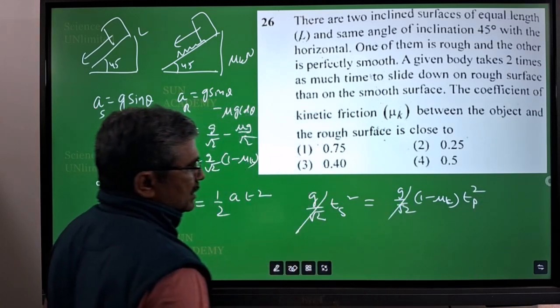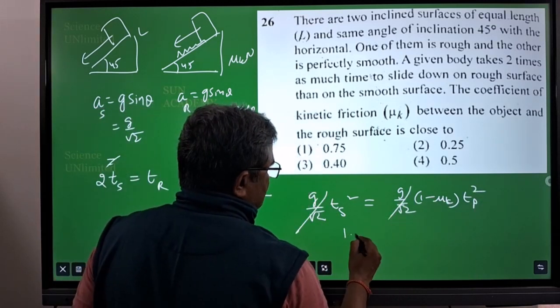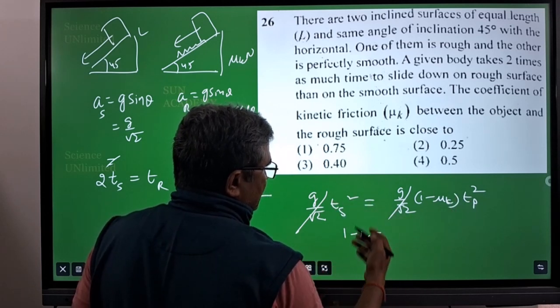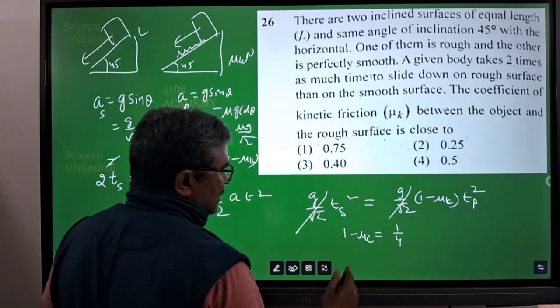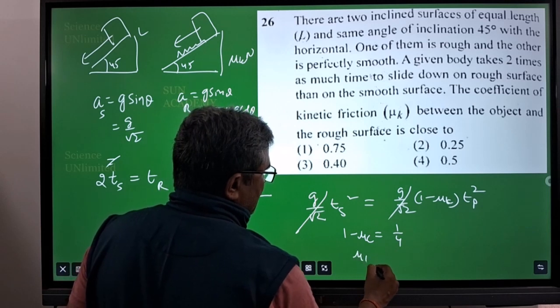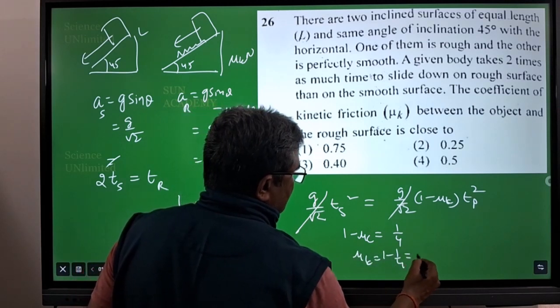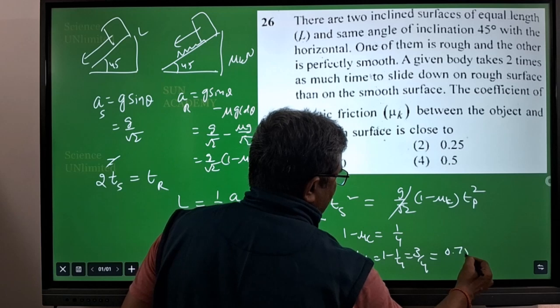g by root 2 gets cancelled. We need 1 minus μk which is equal to ts square by tr square, so you will get 1 by 4 here. If you reshuffle it, μk is equal to 1 minus 1 by 4 which is 3 by 4, which is 0.75.